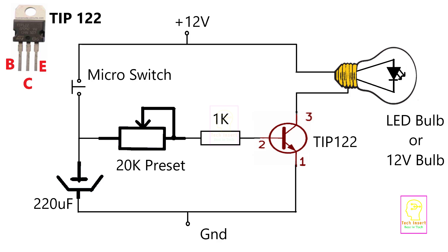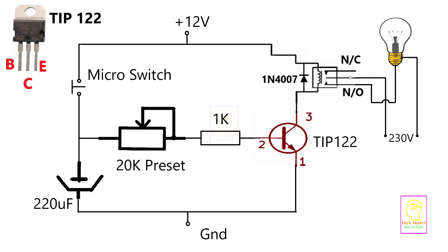Even though we release the micro switch, the charge in the 220 microfarad capacitor will keep the transistor in the on condition. After some time the capacitor charge will end and the transistor will turn off. If the capacitor stores more charge, the output will stay on for a longer time, so we need a higher value capacitor. Another way is to increase the value of the 20k preset so that the current flow from the capacitor is slower. In the second circuit I have replaced the LED bulb with a relay so you can switch on and off a 230-volt load using the same circuit.